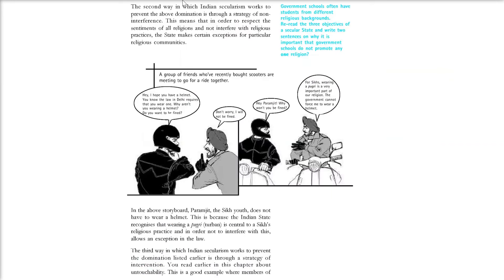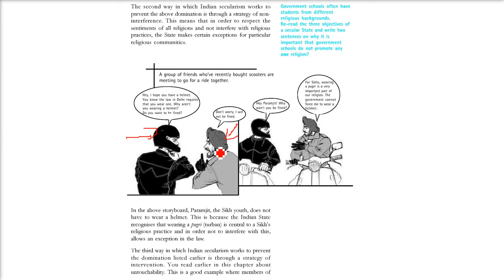The second strategy in which Indian secularism works is non-interference. In order to respect the sentiments of all religions and not interfere with religious practices, the state makes certain exemptions for particular religious communities. For example, the Turban or Pagadi is central to Sikh religious practice, so the government has given an exception to the law — if you are Sikh, it is not necessary for you to wear a helmet.